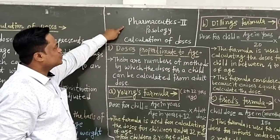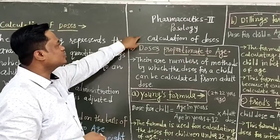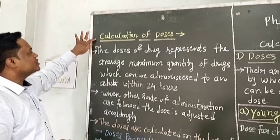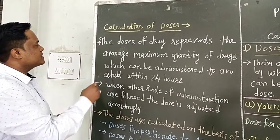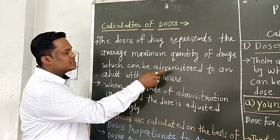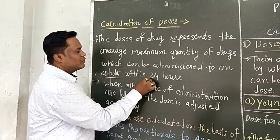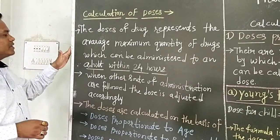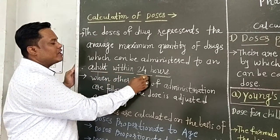Today's subject is Posology, Chapter 3, and the subject is calculation of doses. The dose of a drug represents the average maximum quantity of drug which can be administered to an adult within 24 hours. This is the standard dose given according to the adult within 24 hours.